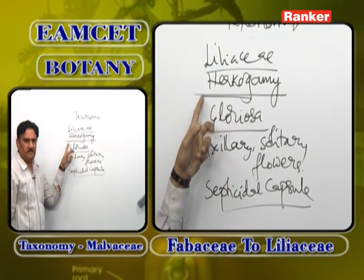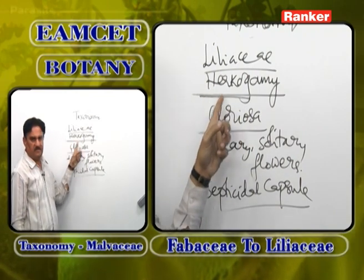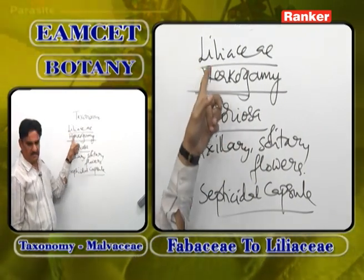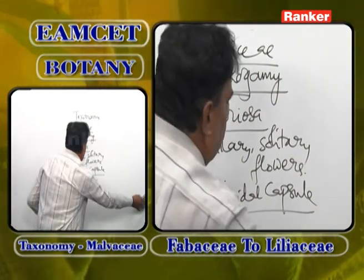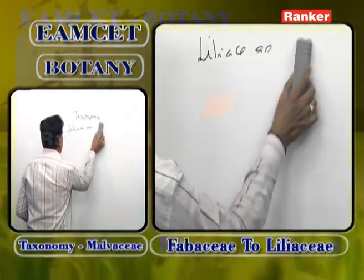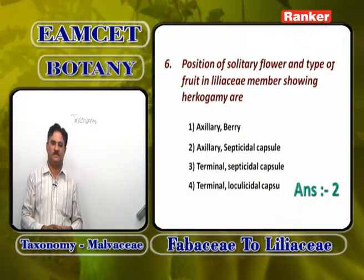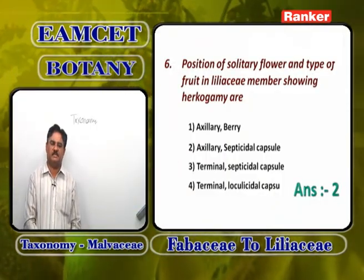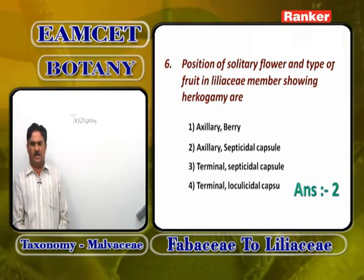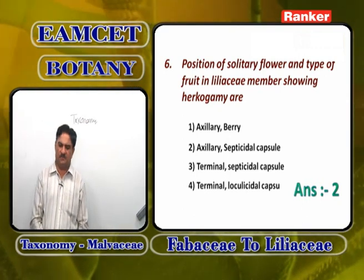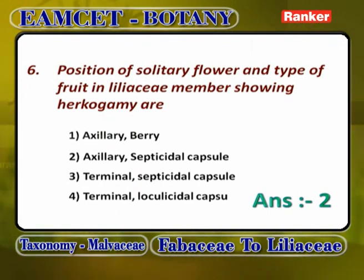Hercogamy means either arrangement of essential organs at different heights (as in Hibiscus) or in different directions (as in Gloriosa). So a Liliaceae plant with hercogamy is Gloriosa. In Gloriosa, the single solitary flower is axillary and the fruit is a septicidal capsule. Answer: axillary solitary cyme and septicidal capsule.